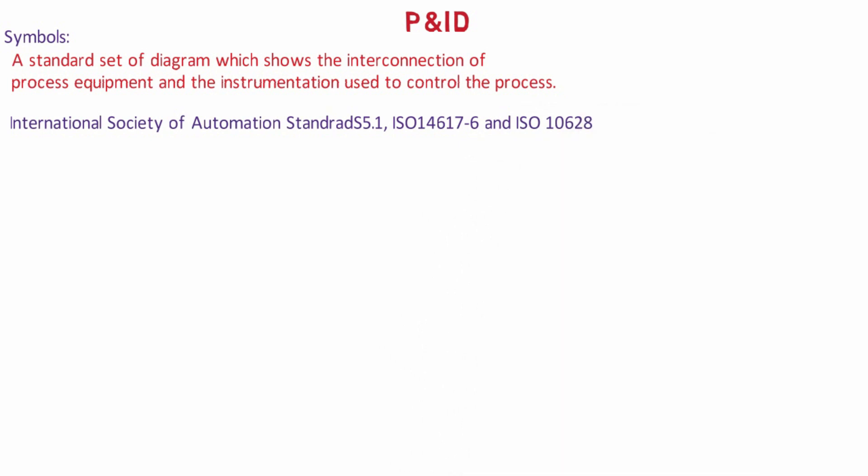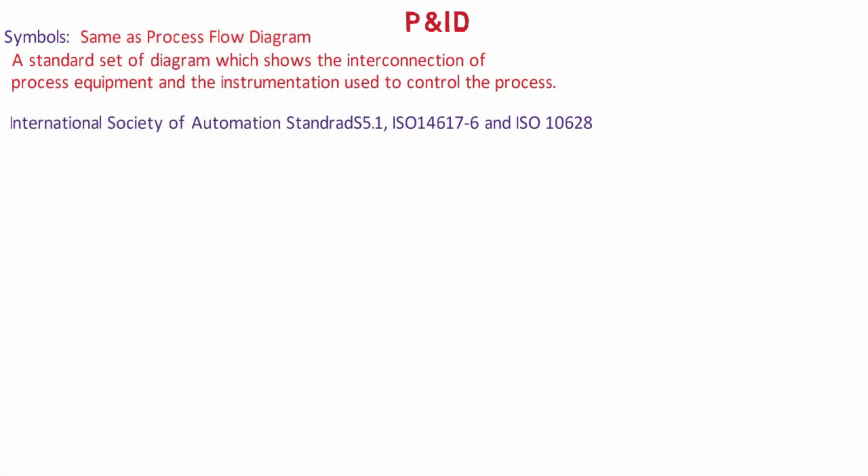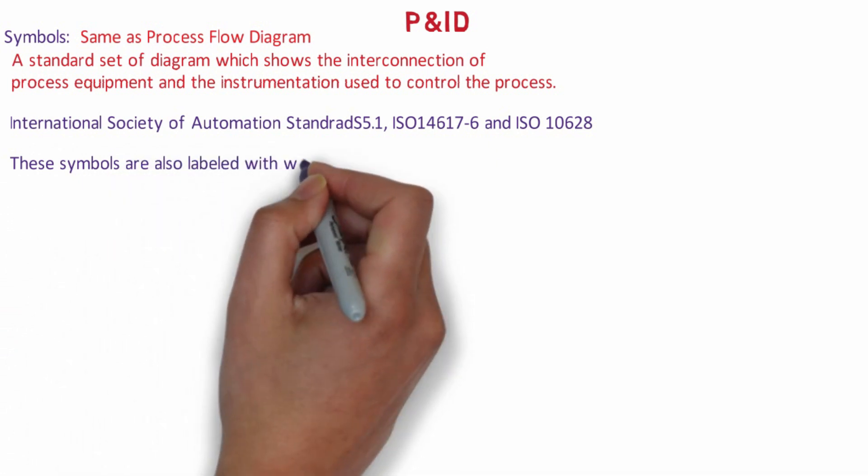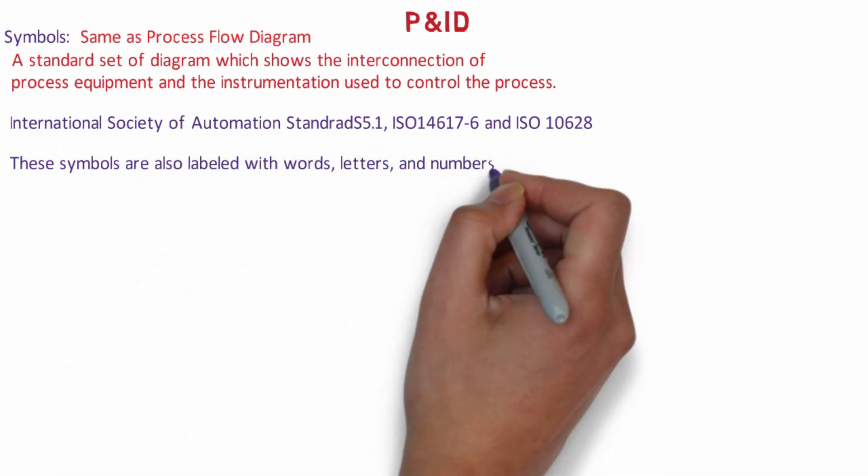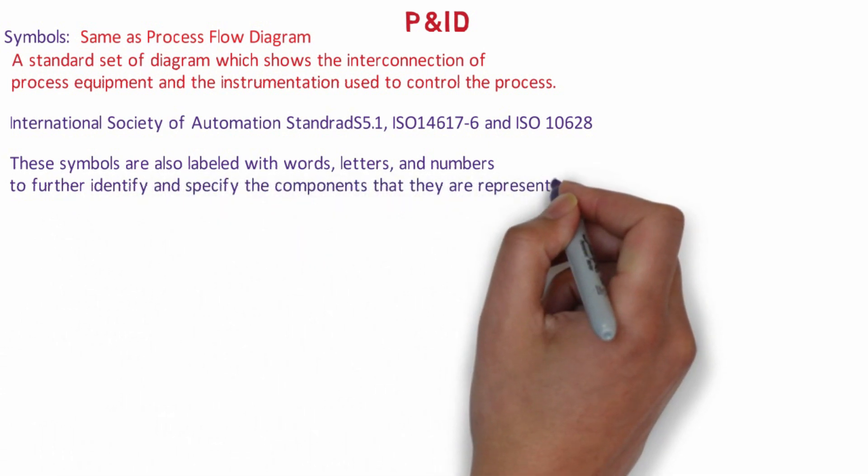The symbols used to represent process equipment items are frequently the same as described for the process flow diagrams. These symbols are also labeled with words, letters and numbers to further identify and specify the components that they are representing.